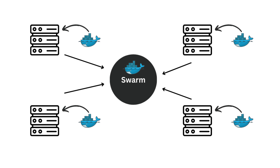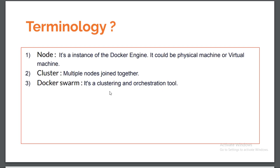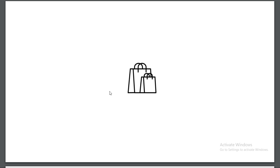To summarize: we have nodes, which are machines with Docker engine installed. We connect those nodes together using Docker Swarm, and once multiple nodes are connected we call it a Docker cluster. Docker Swarm also helps us manage that created cluster, which is what we call orchestration. I hope you've understood these terminologies.